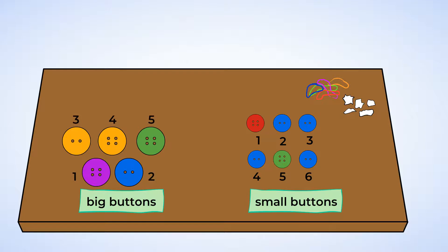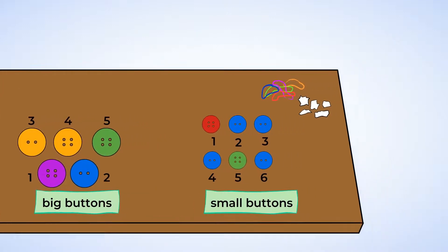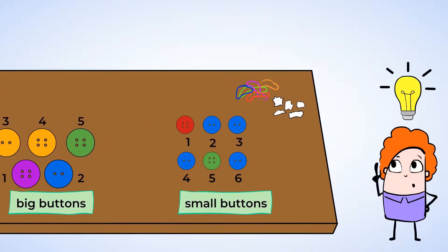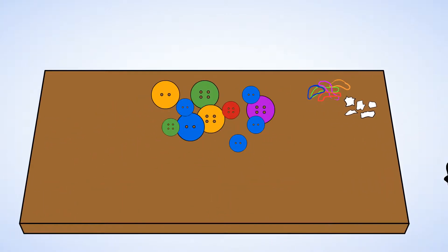Sue has more small buttons than big buttons to make pictures with. Could we sort these buttons in another way? I have an idea. Take a look. This button has two holes in it. And this button has four holes in it. We could have used this to sort the buttons.